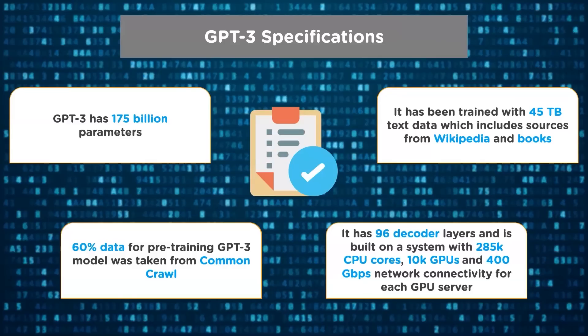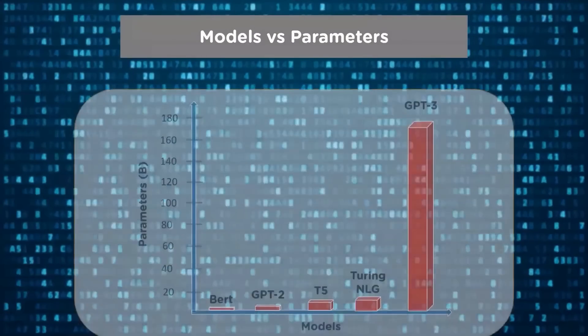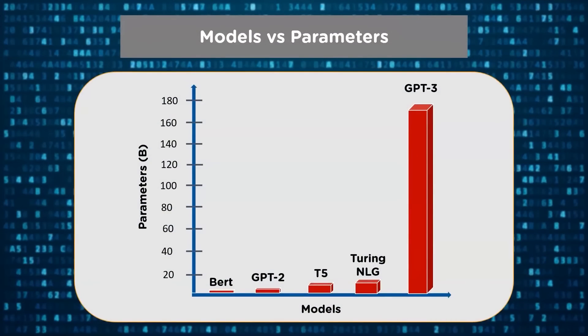GPT-3 was trained on a supercomputer developed by Microsoft and OpenAI collectively. This chart reflects the different language models and number of parameters in billions used to create each model. Using pre-trained models and fine-tuning them to solve specific tasks has become a popular trend in natural language processing. Looking at the graph, you can see that Google's BERT model uses 110 million parameters, while the large model uses 340 million parameters. The previous GPT-2 model had 1.5 billion parameters.